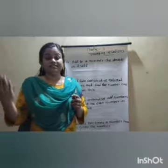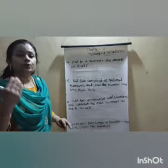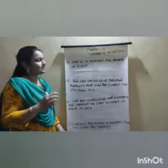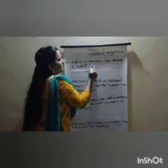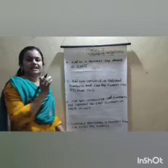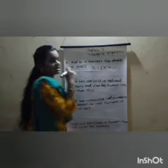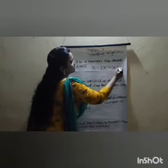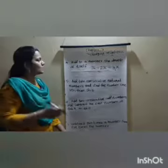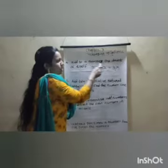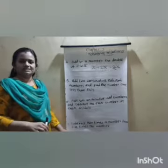Next statement: add to a number the double of itself. Number equals X. So X plus double of itself: X plus 2X. X plus 2X equals 3X. We have created the algebraic form: add to a number X the double of itself — X plus 2X equals 3X.